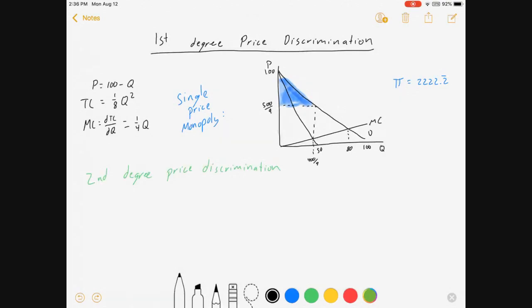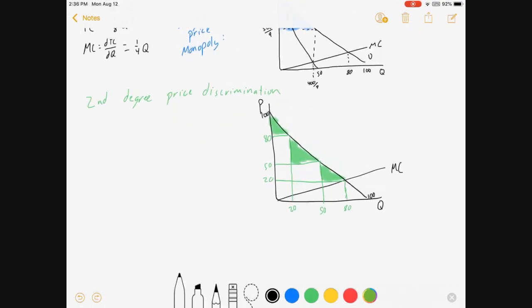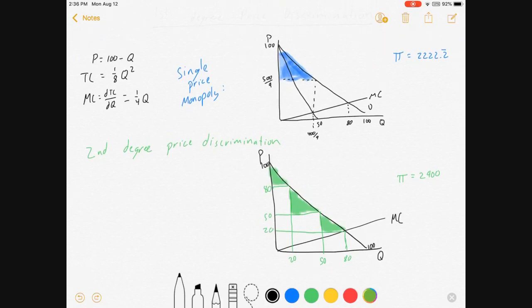And then in my video, we solved for second-degree price discrimination. Under a very specific pricing scheme, it looked like this with consumer surplus shaded in green. And we found that the firm's profit was $2,900. Notice, as we were able to discriminate prices, profit went up.